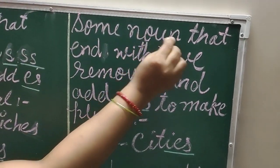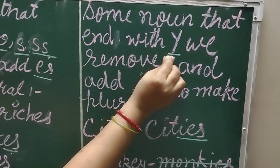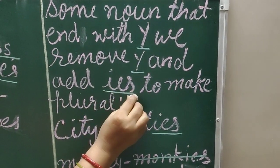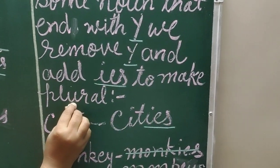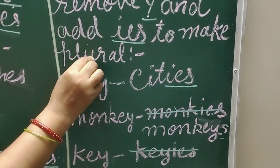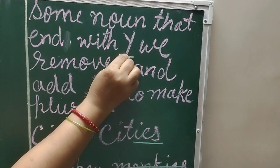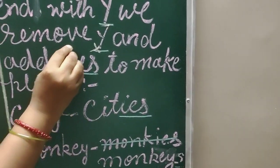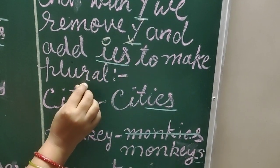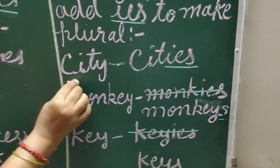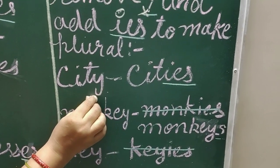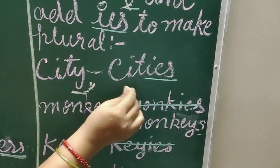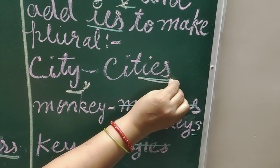Some words that end with Y — we remove Y and add IES to make the plural. For example, city ends with Y, so we remove Y and add IES to make it plural, giving us cities.